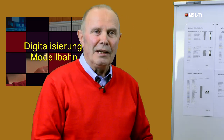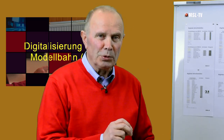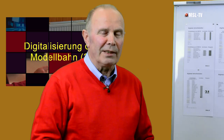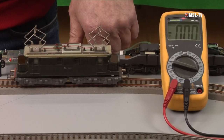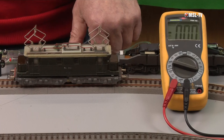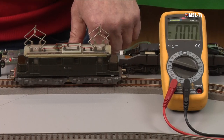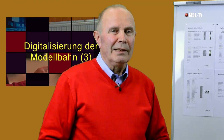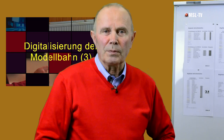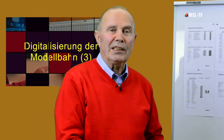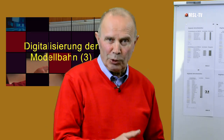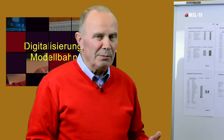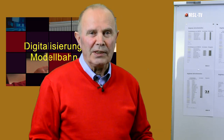Folgerichtig wäre diese Lok mit Decodern der Nennstromstärke 1,2 Ampere nicht digitalisierbar. Wollte man trotzdem eine solche Maschine digitalisieren, müsste man sich einen Decoder wählen, der eine Nennstromstärke größer als 1,5 Ampere hat. Da sind wir sofort bei jenen Decodern, die in LGB oder Großbahnen eingesetzt werden. Das hätte aber in der H0-Maschine ein Platzproblem zur Folge. Man müsste also immer überlegen, lohnt sich der Aufwand.